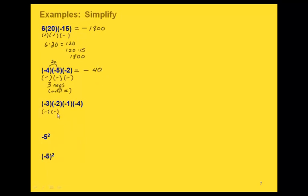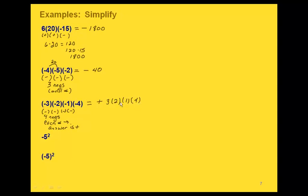In this one we actually have 4 negatives. Since that's an even number, our answer is positive. We can write the positive sign in here just to remember that. Once we figure out the sign, we can take all those negatives off and just multiply the numbers: 6 times 1 times 4. 6 times 1 is 6, and 6 times 4 gives us 24. So our answer is positive 24.